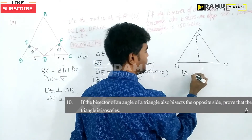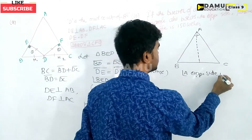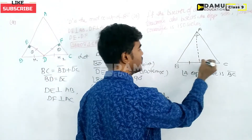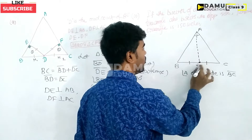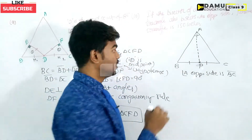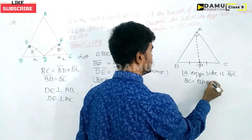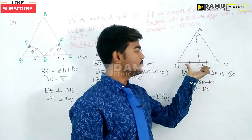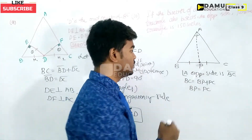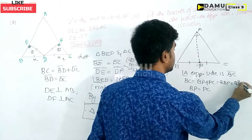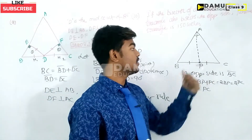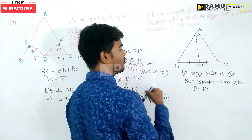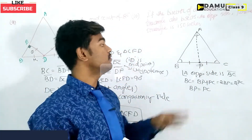We draw the bisector from angle A to the opposite side BC. For angle A, the opposite side is BC. The bisector meets BC at point P, so BP equals PC — the opposite side is also bisected. We need to show AB equals AC to prove triangle ABC is isosceles.